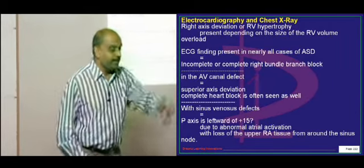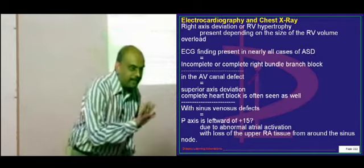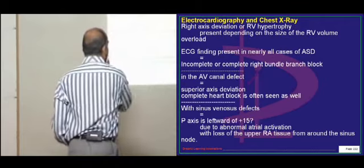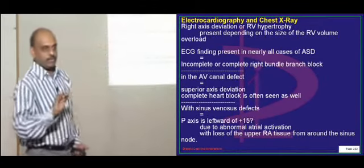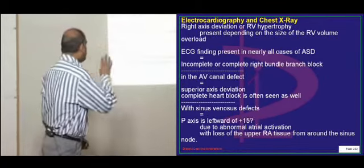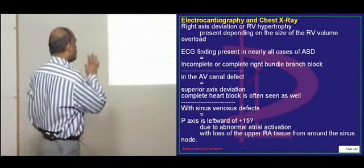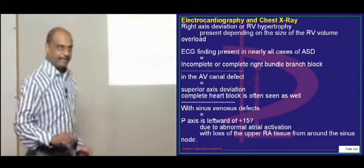The electrical activation will travel in upward direction, which leads to development of a leftward deviation. So sinus venosus type of ASD can have the P axis which is basically leftward directed.